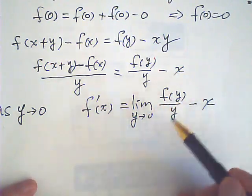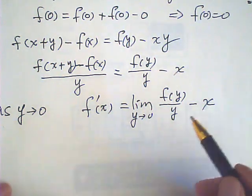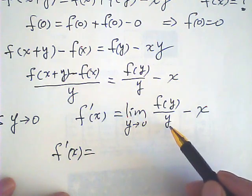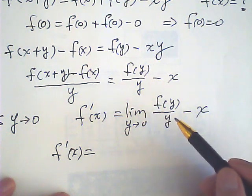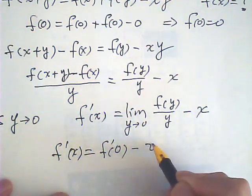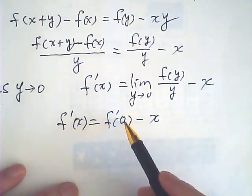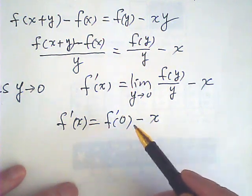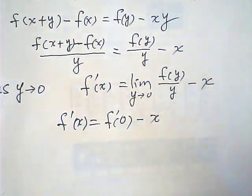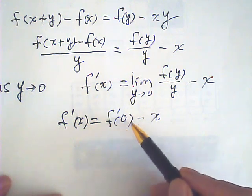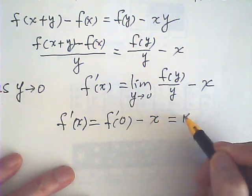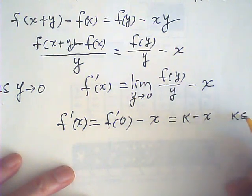Now, we are now focusing on this. When y approaches to zero, we can use L'Hôpital's rule for the limit. This will be f derivative of zero minus x. We know that the derivative of f with respect to y is a function, and f prime of zero becomes a y-intercept. It is a constant. Because there's no variable, this leftover is a constant. So, this becomes K minus x, where K is a real number.